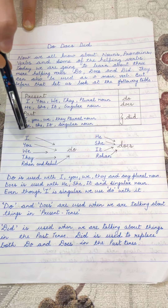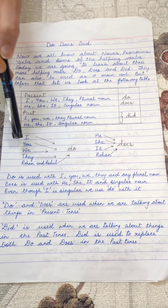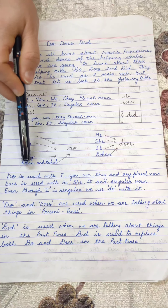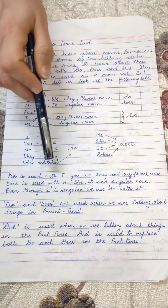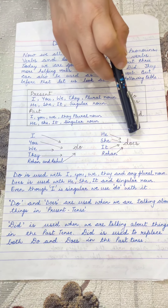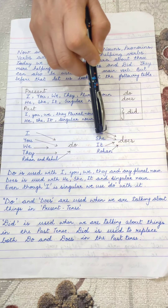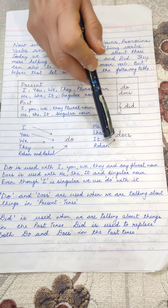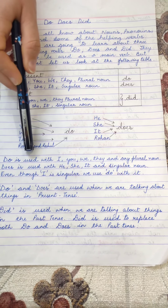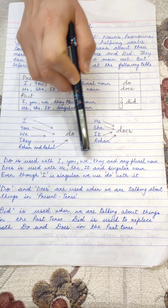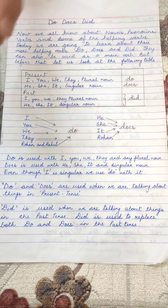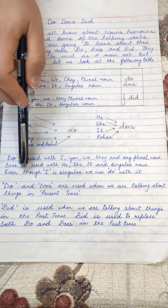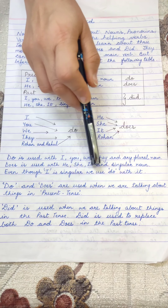Do goes with I, you, we, they, and plural nouns. For example: I do, you do, we do, they do. Rohan and Rahul — that is two persons — is a plural noun, so we use 'do'. Does goes with he, she, it and singular nouns. He does, she does, it does, Rohan does. Here Rohan is only one person, so it is a singular noun and we use 'does'. Even though I is singular, we use 'do' with it.